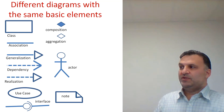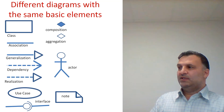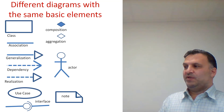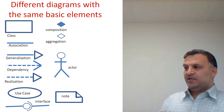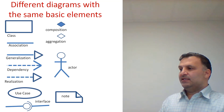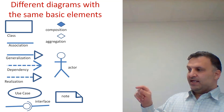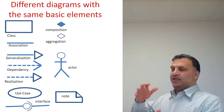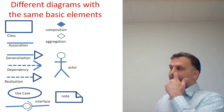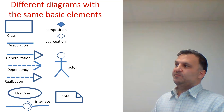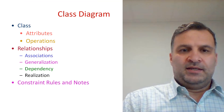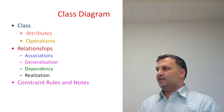For example, the rectangle is the class; a line is an association; a line with a hollow triangle is generalization; dependency is an arrow; realization is a dashed line with a hollow triangle; interface can also be noted. We can add comments, and an actor is an external entity that interacts with our system. A filled diamond is composition, and a hollow diamond is aggregation.